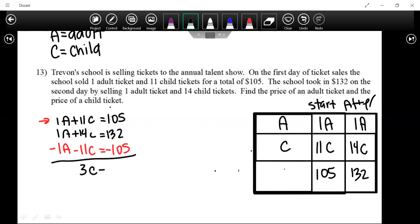We're going to get 3C equals 27. C equals 9. How much for the price of a child's ticket? 9 bucks. We're going to take this and plug it back in. I'll plug this one back into the one down below. 1 adult ticket plus 14 times 9 child's tickets equals 132.